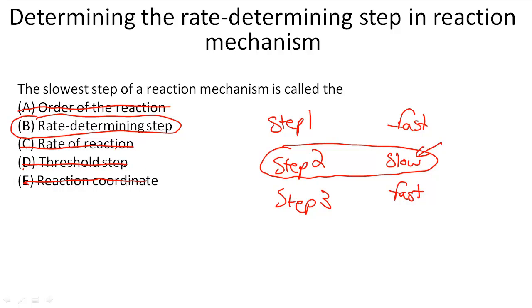So B is the answer to this problem and reminds us that the slowest step in the proposed mechanism is called the rate determining step or rate limiting step.